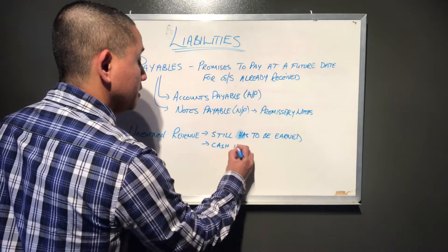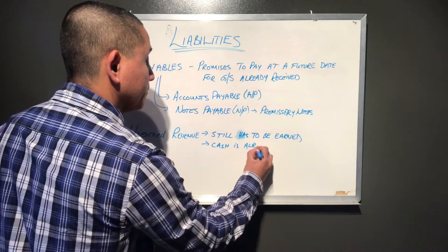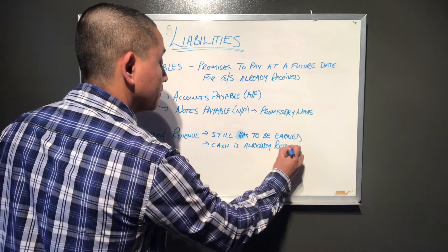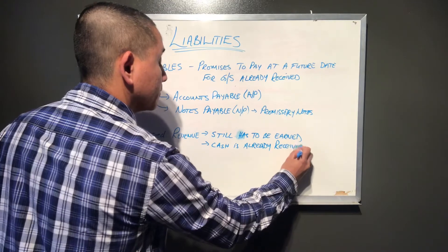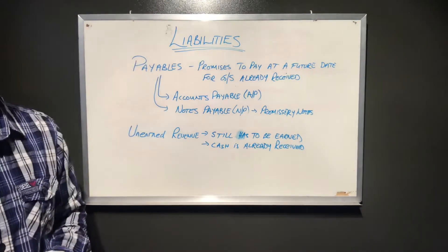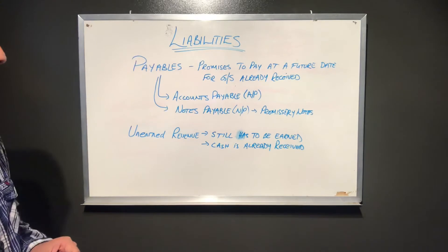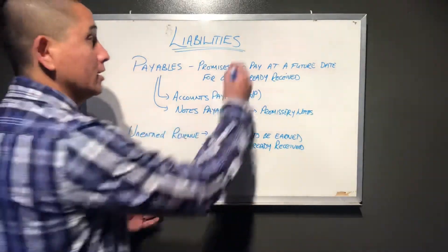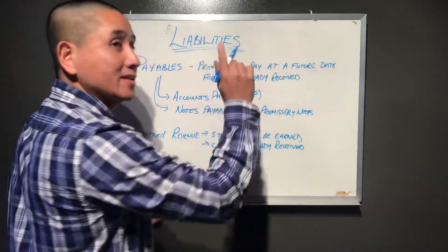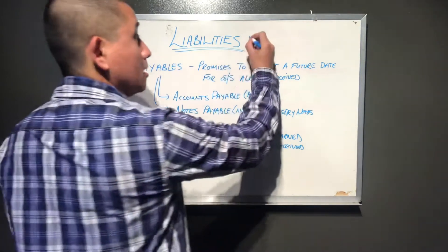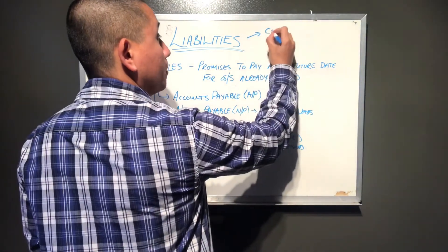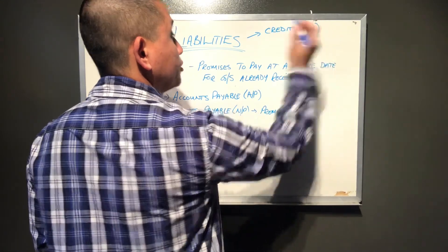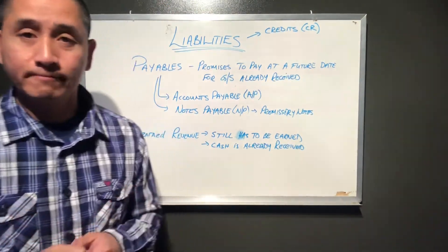One important thing about liabilities is that unlike assets, which are accounted for by debits, liabilities are accounted for by credits. I'll elaborate on this more when we go through journal entries and journaling different types of transactions.